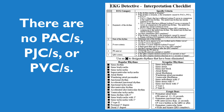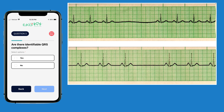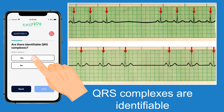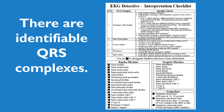Going back to our checklist, since we have no PACs, PJCs, or PVCs, we can deductively eliminate those off our checklist. Question three asks if there are identifiable QRS complexes. Looking at this rhythm, we definitely have QRS complexes that are identifiable and distinguishable. We select yes and hit next. Since we do have identifiable QRS complexes, we can automatically eliminate ventricular fibrillation, because that rhythm does not have definable QRS complexes.